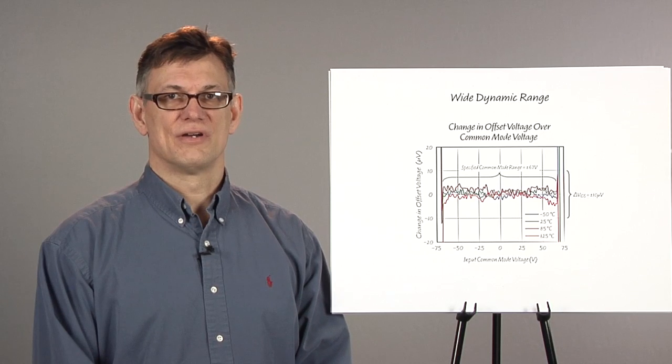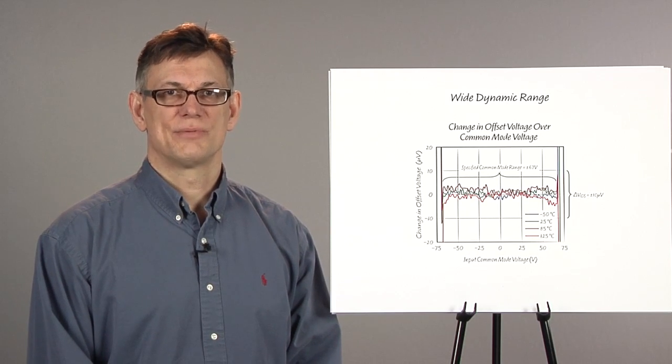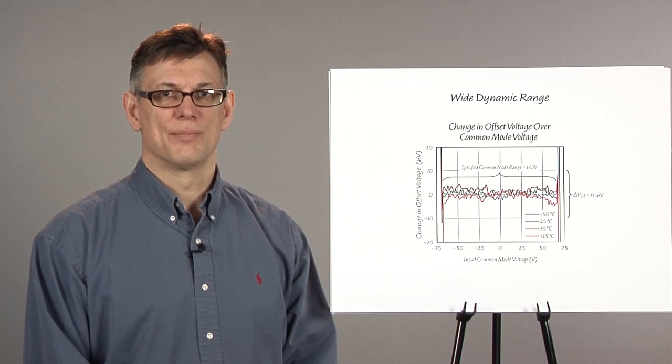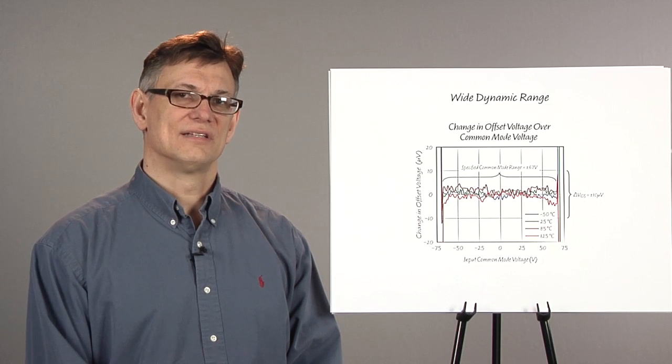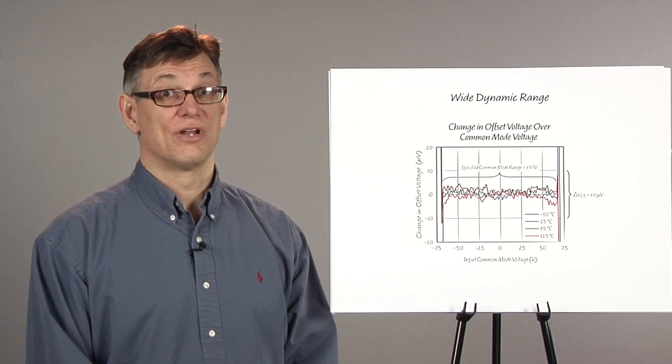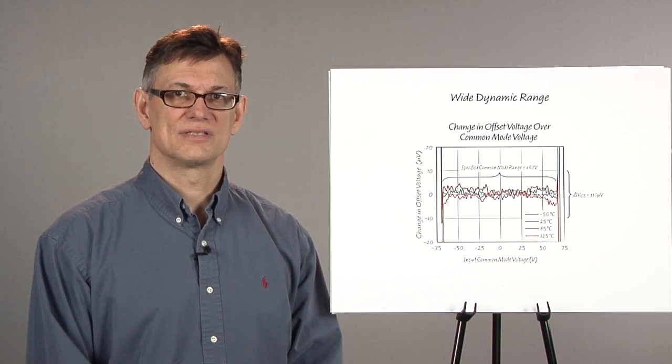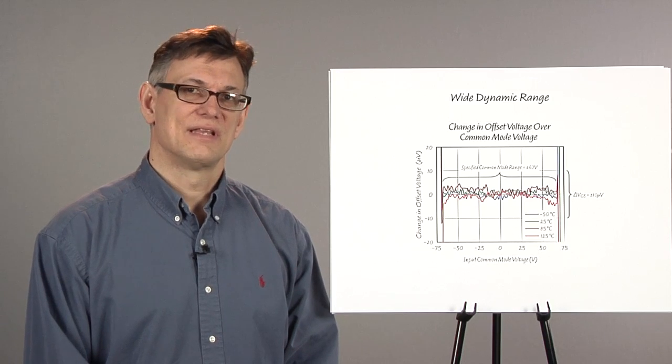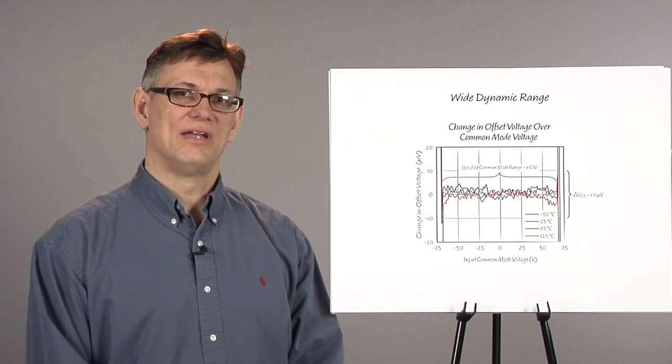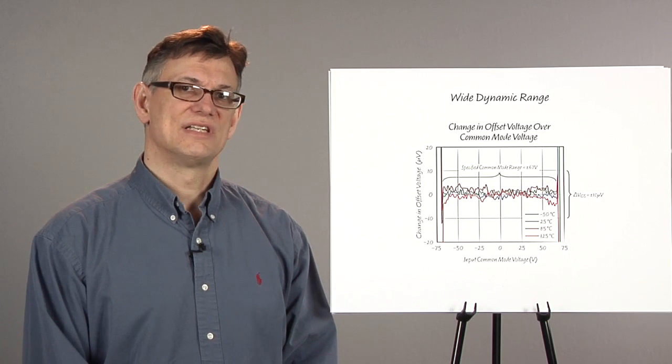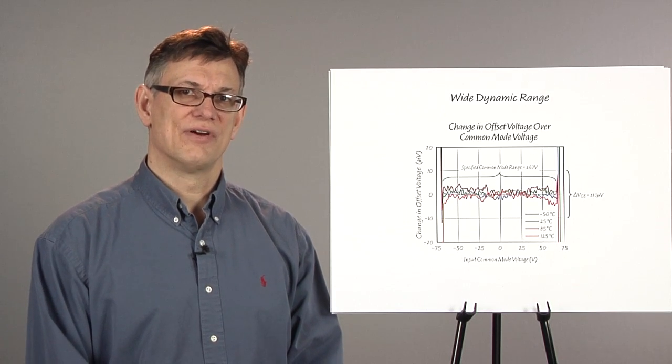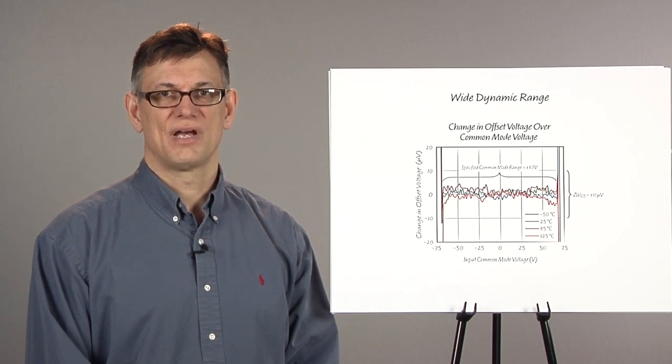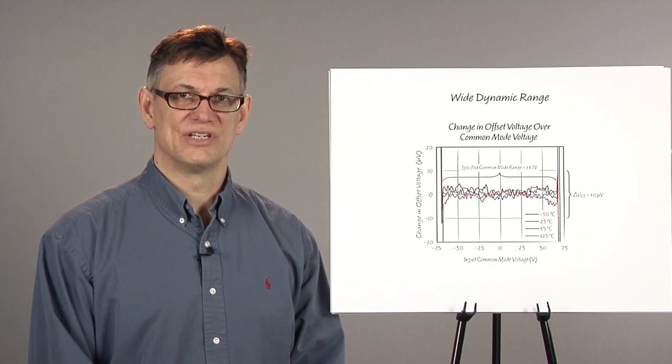But unlike other CMOS amplifiers, whose fine transistor geometries limit power supply operation to 5 volts, the LTC6090 can operate on 140 volt supplies. This means that the LTC6090 will provide almost infinite input impedance to sense and buffer voltages which may vary over a plus minus 70 volt supply range without the need of input attenuation.